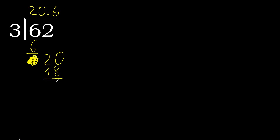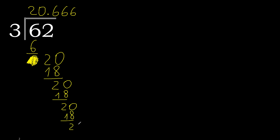Subtract — remainder is 2. That is not a number, therefore complete with 0. 20 again. 3 multiplied by 6 is 18. Subtract — complete. Point is here. 3 multiplied by 6 is 18. Subtract — complete. Repeat, repeat — therefore repeat.